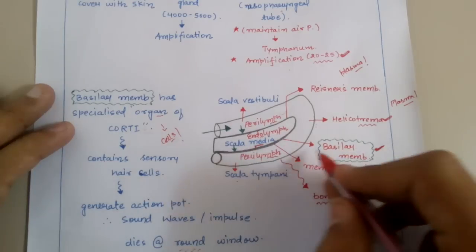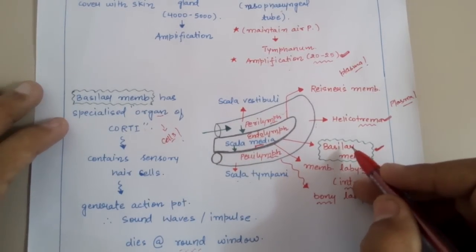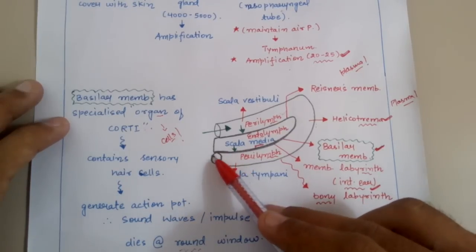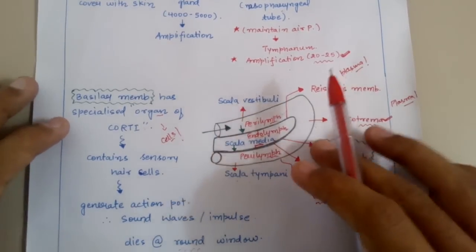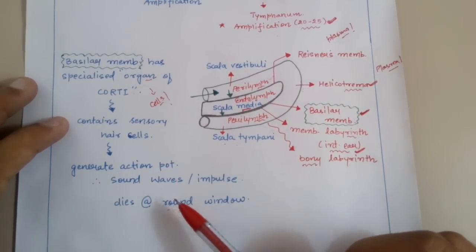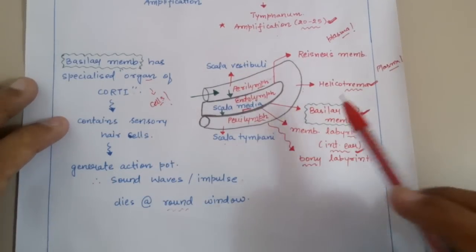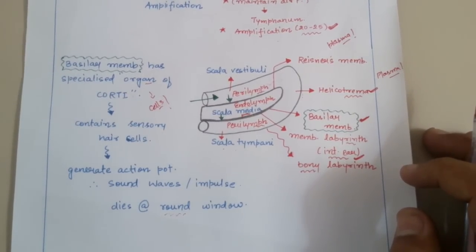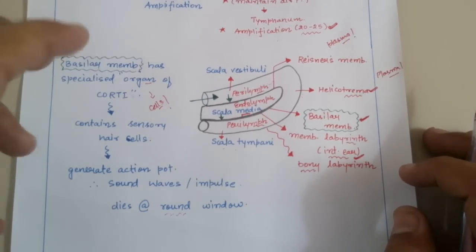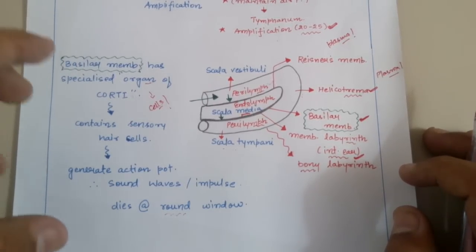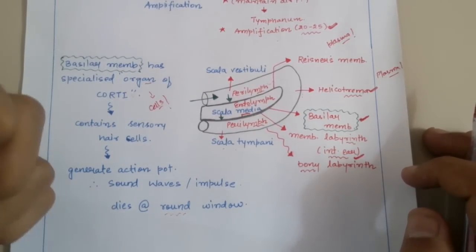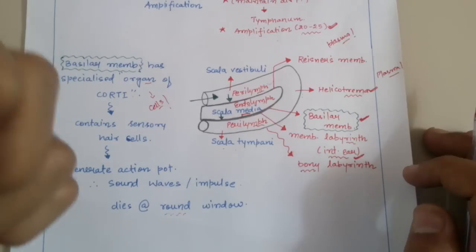Any remaining sound after this comes to the perilymph of scala tympani, and the sound dies at the round window. So this is how we are able to hear a particular kind of sound, which is mainly due to the basilar membrane, and more specifically due to the specialized cells known as the organ of Corti, which are present in the basilar membrane between scala media and scala tympani of the internal ear.